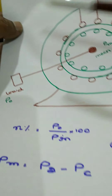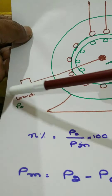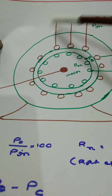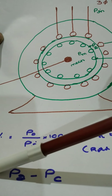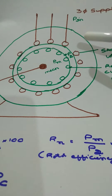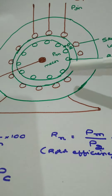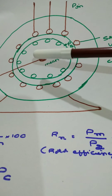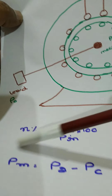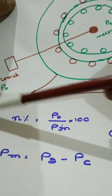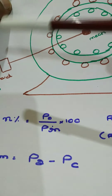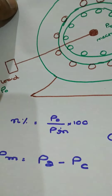Efficiency of an induction motor is output divided by input. At various stages, losses occur: stator losses, rotor copper losses, and friction and windage losses. Ultimately you get the useful power at the load side — that useful power is utilized to drive the load. So efficiency is output by input.